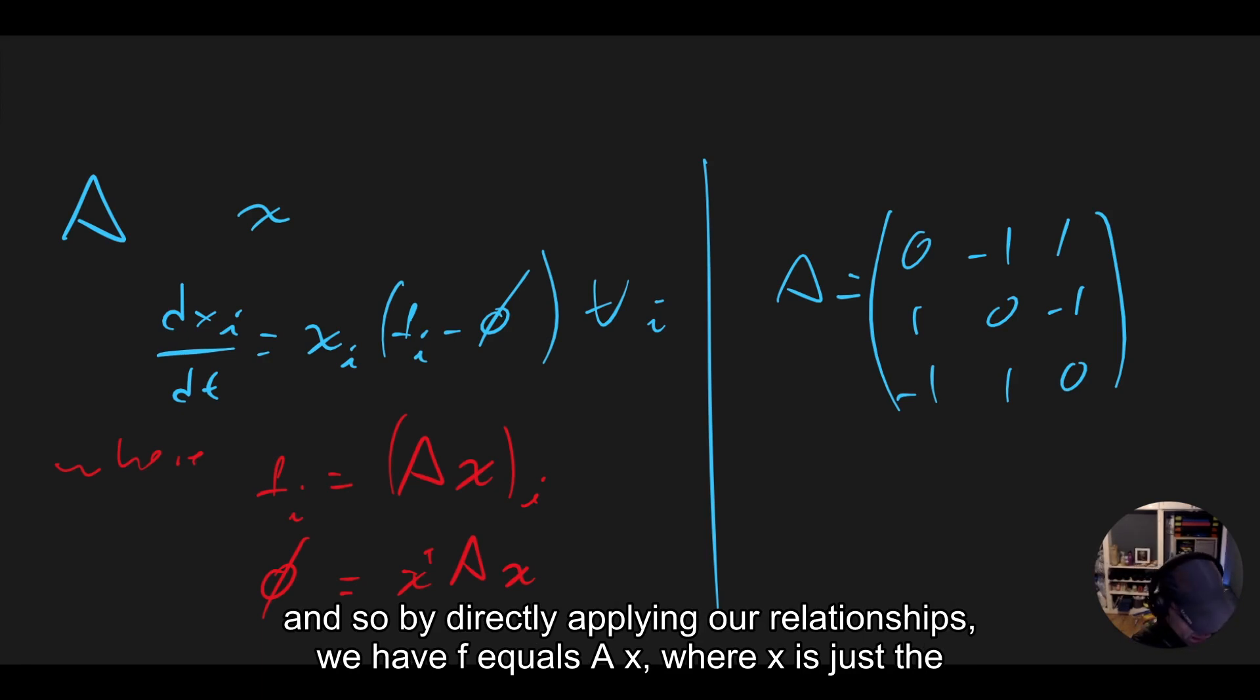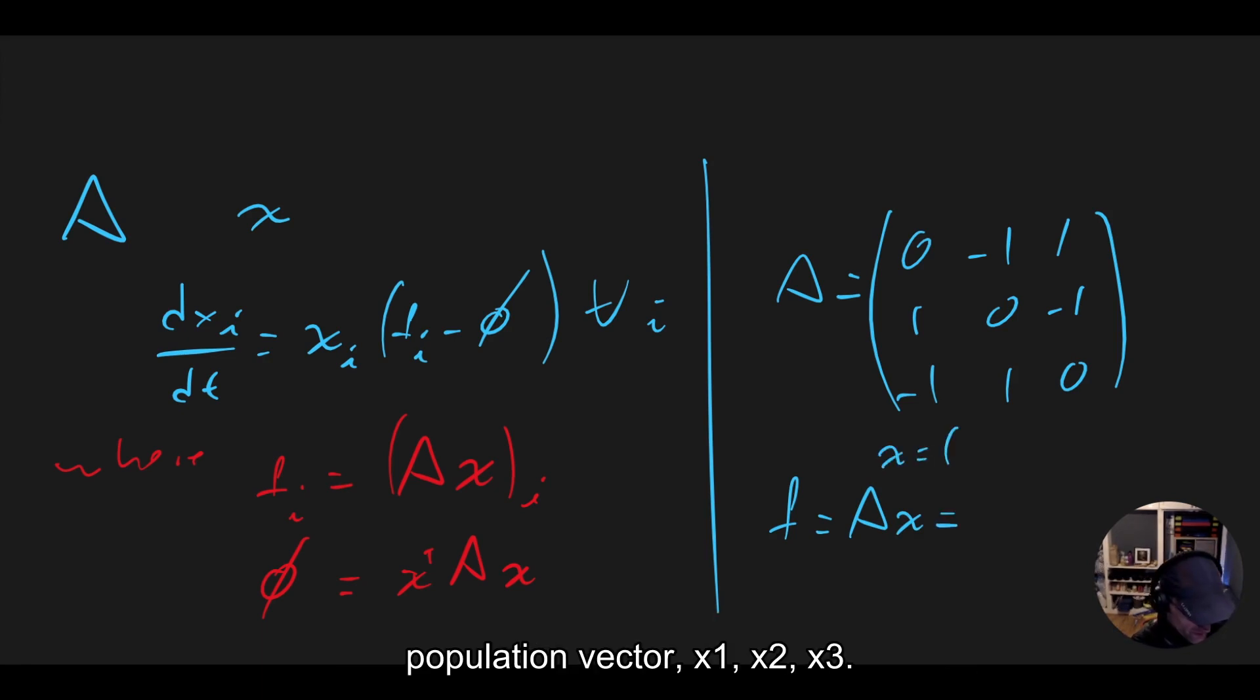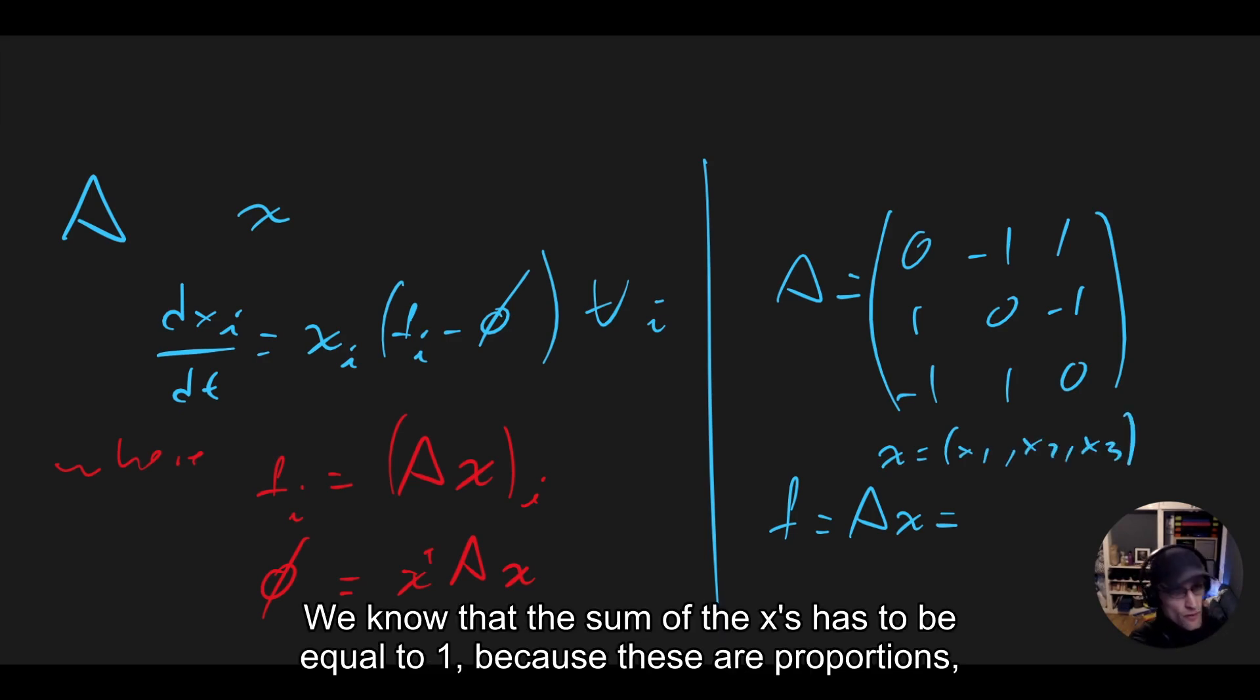And so by directly applying our relationships, we have F equals Ax, where x is just the population vector [x1, x2, x3]. We know that the sum of the x's has to be equal to 1, because these are proportions.